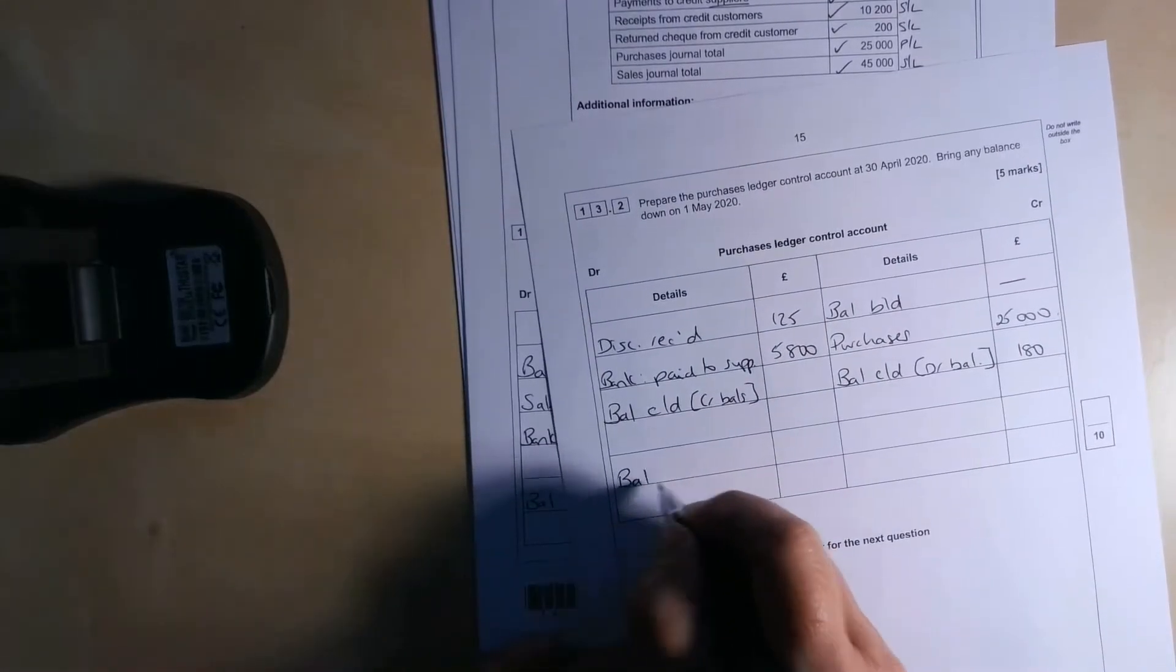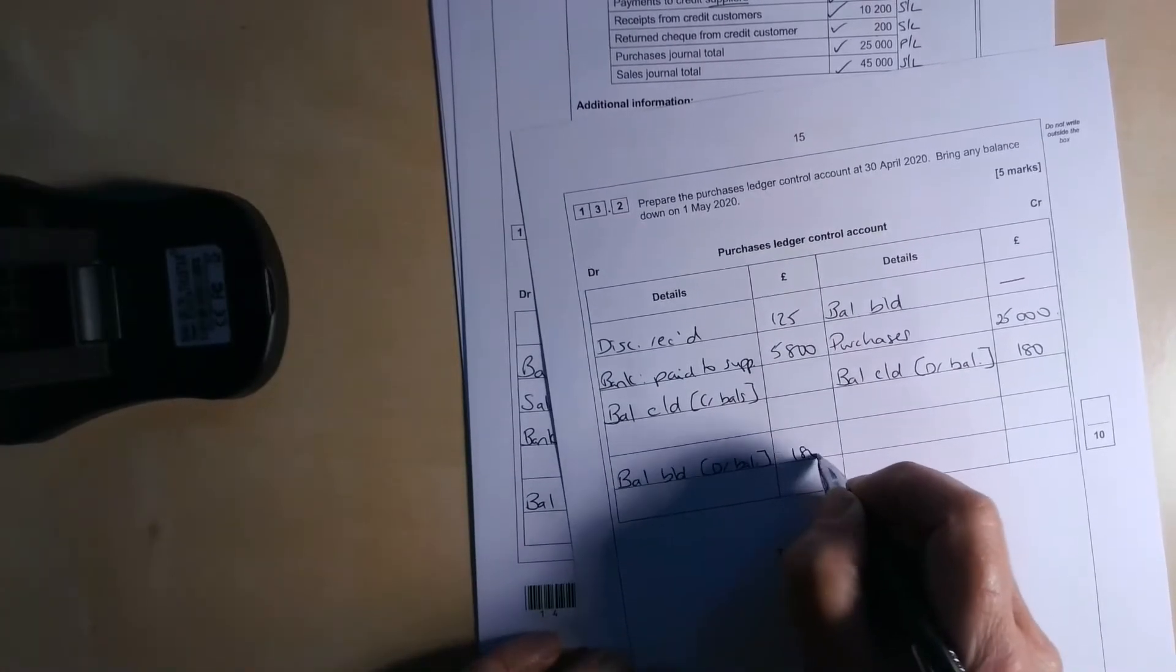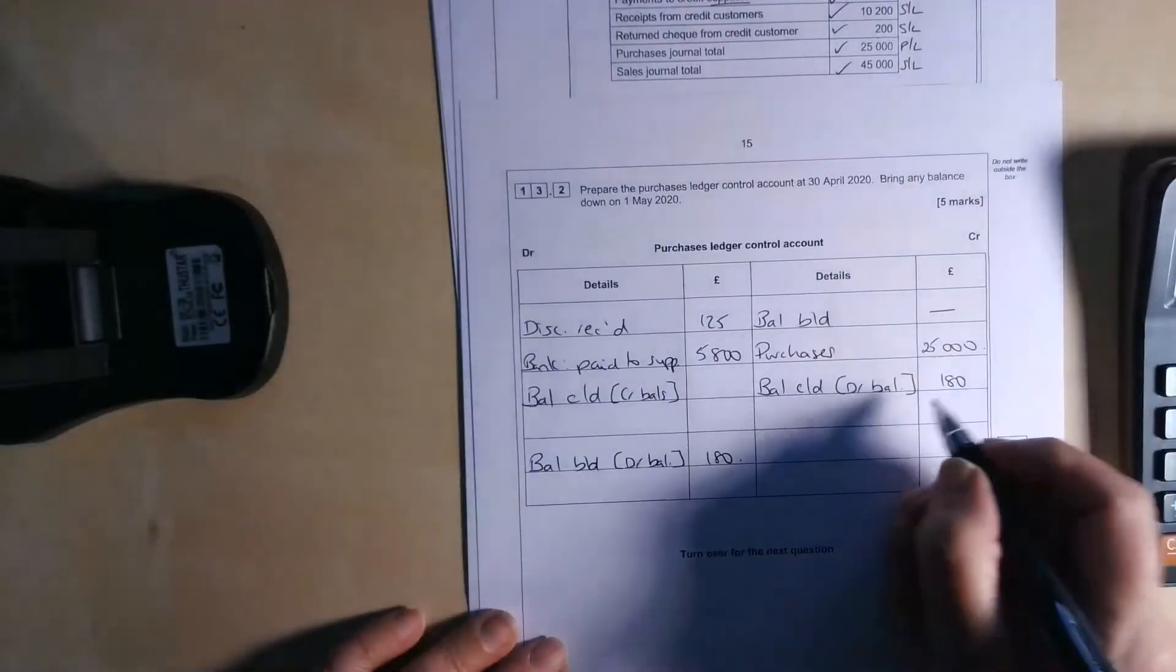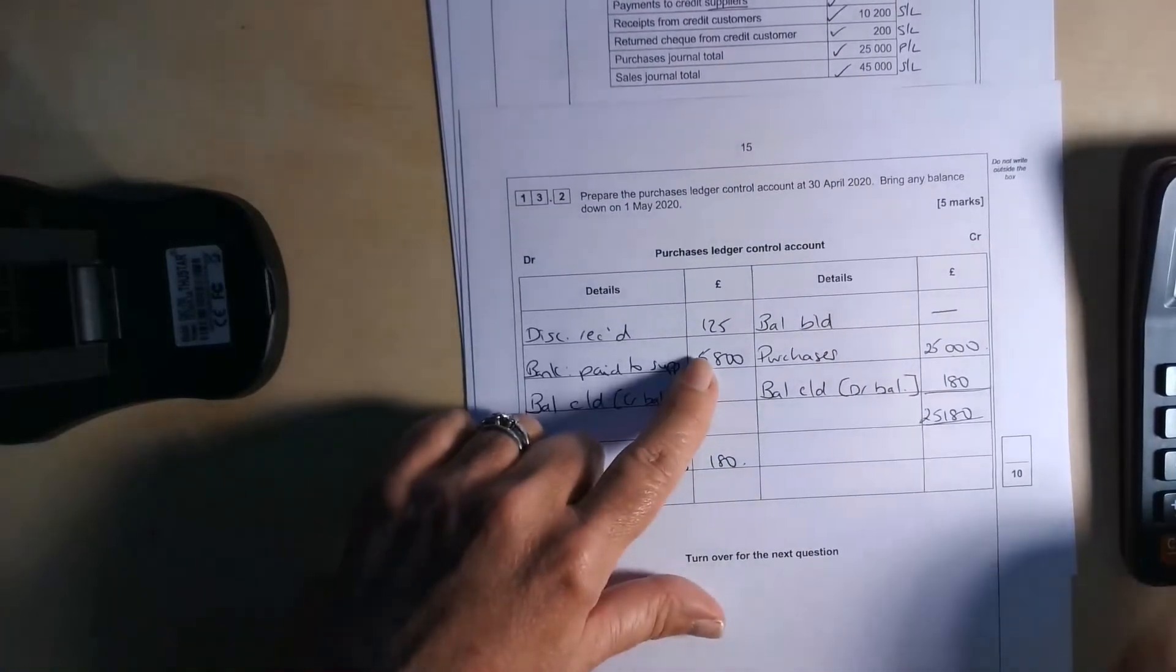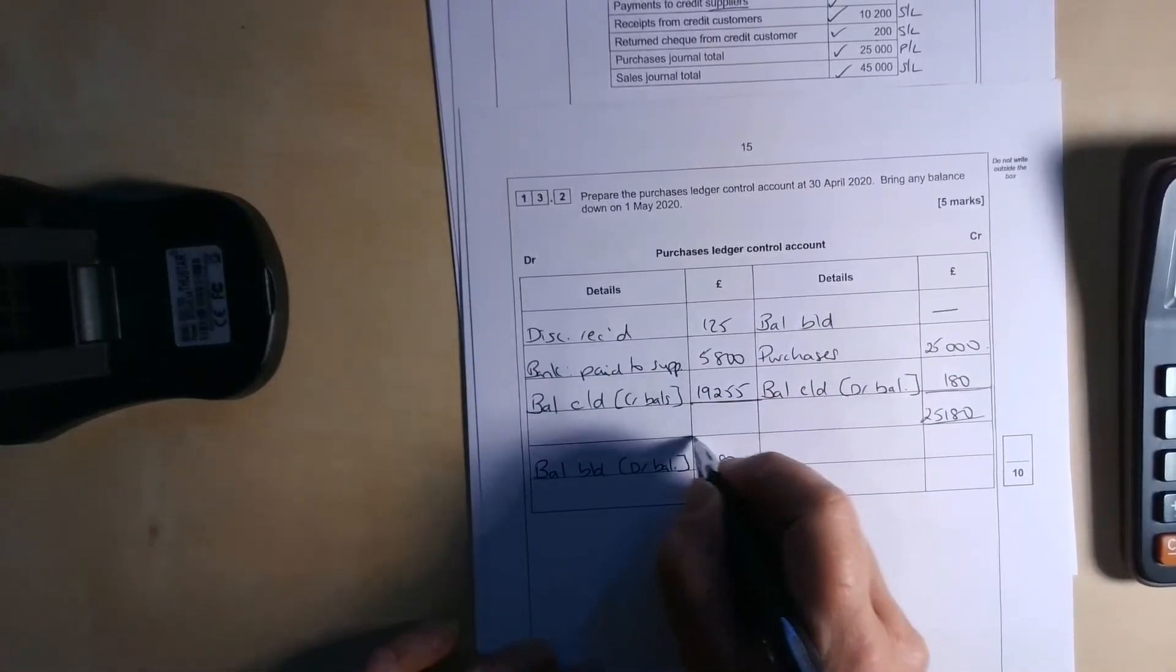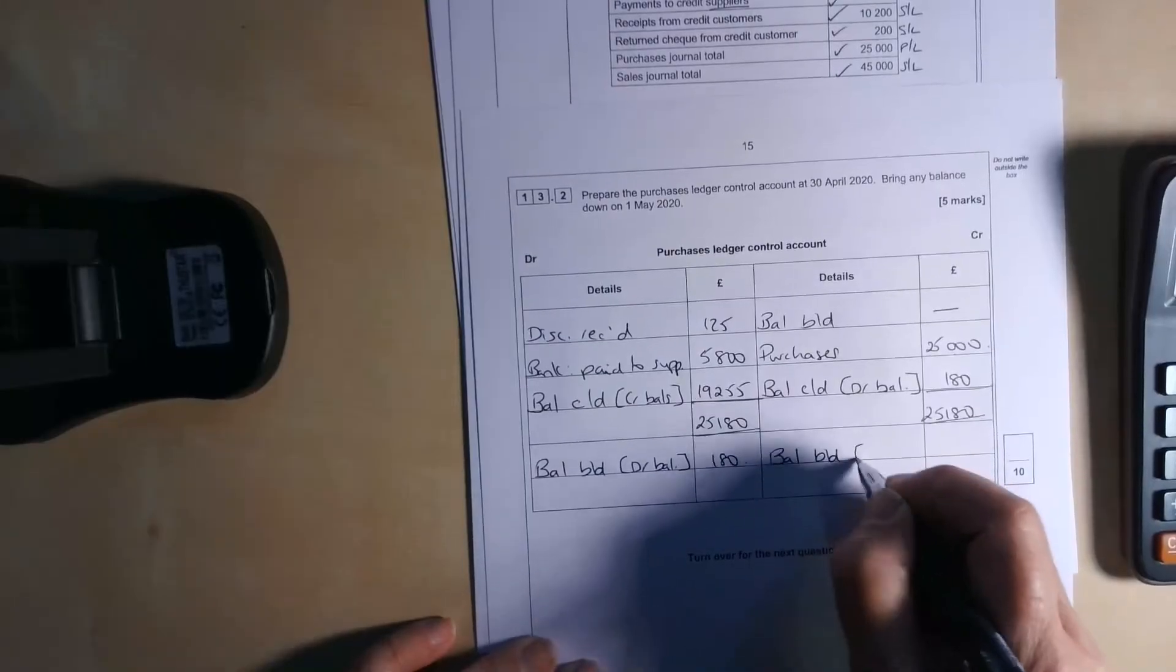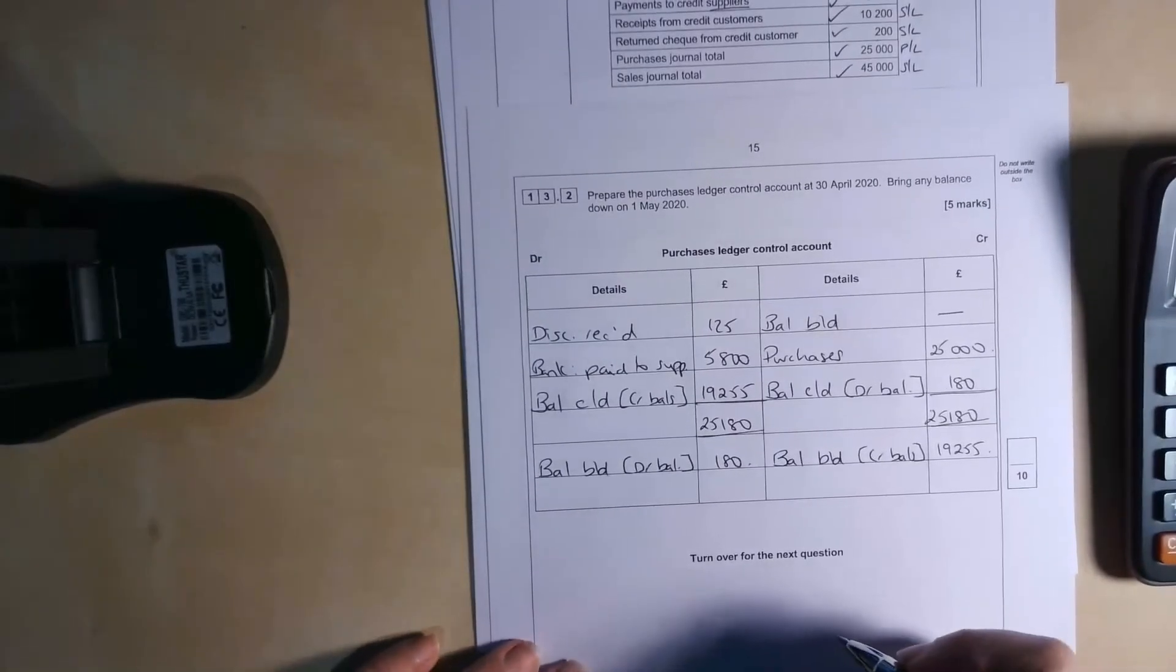It's going to come down. It's a debit balance. It's going to come down on the debit side here. So when it says it's a debit balance, it's which side it comes down at the start of the next month on, not which one you're carrying it down on. So we're going to use that to balance off. So we've got £25,180 on that side. And then if we take away £125 and £5,800 on there, we've got £19,255 as our credit balance is carried down. £25,180. And let's make sure we bring those down, BALBD, credit BALs for the start of the next month. So that's all there is to it.